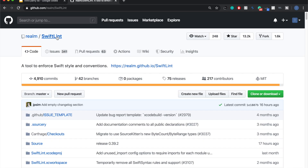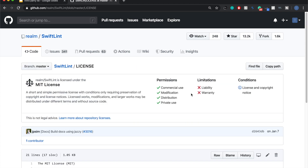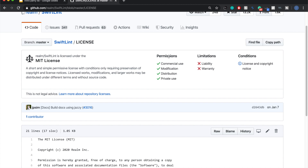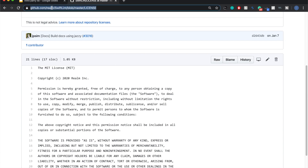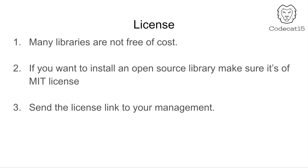This is a library I use all the time — SwiftLint. As you can see here, the license is MIT. When I click on it, you can see what permissions you have and what the limitations are — here is the full license description. What I do is copy this link and send it to my management team. The management reviews that particular license, and only when the management gives me a go-ahead can I use this library in the project. In most cases, if the license is MIT, management gives approval because MIT is a purely open source license. But still, as a good developer, you should email the license link to your management.